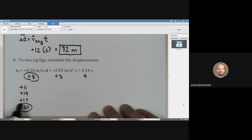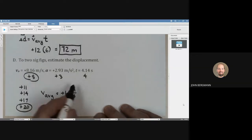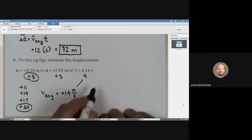It started at 8 and ended at 20. So what's your V average? 28 divided by 2, 14 meters per second. Multiplied by about 4 seconds. Ballpark answer, 56 meters.